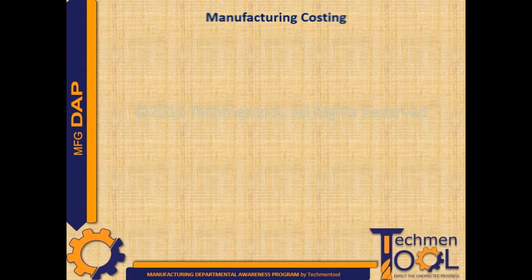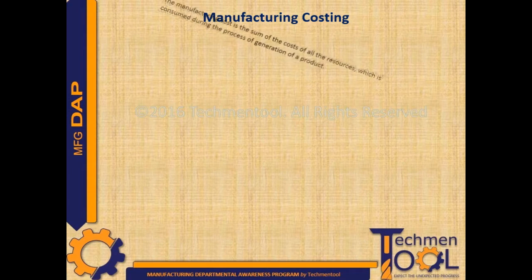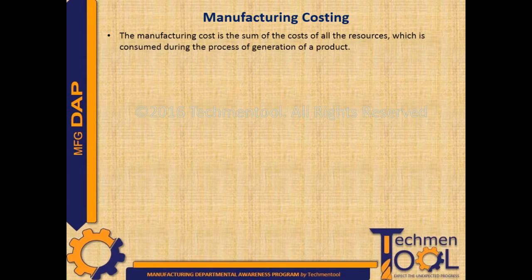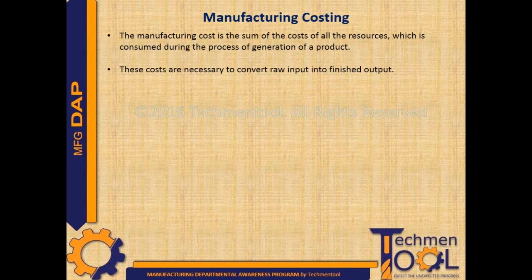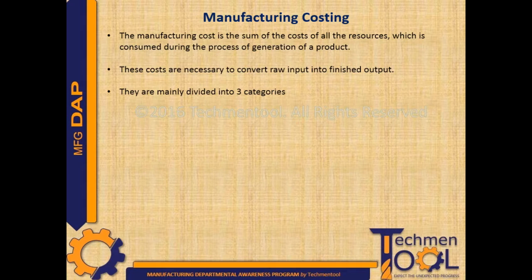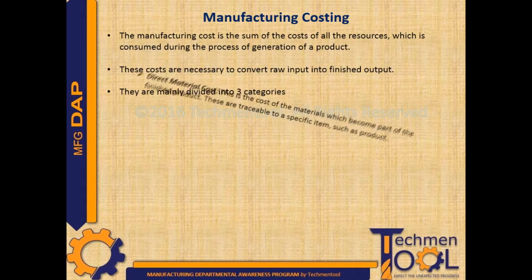One of the important activities of the manufacturing process is the determination of manufacturing cost. The manufacturing cost is the sum of the costs of all the resources which are consumed during the process of generation of a product. These costs are necessary to convert raw input into finished output. They are mainly divided into three major categories: direct material cost, direct labor cost, and factory overhead.